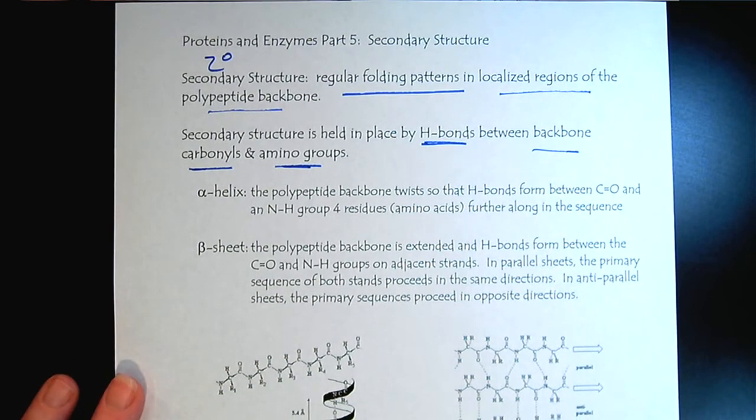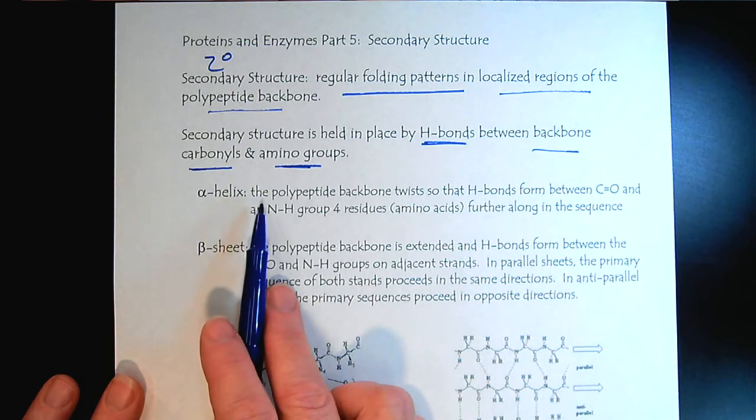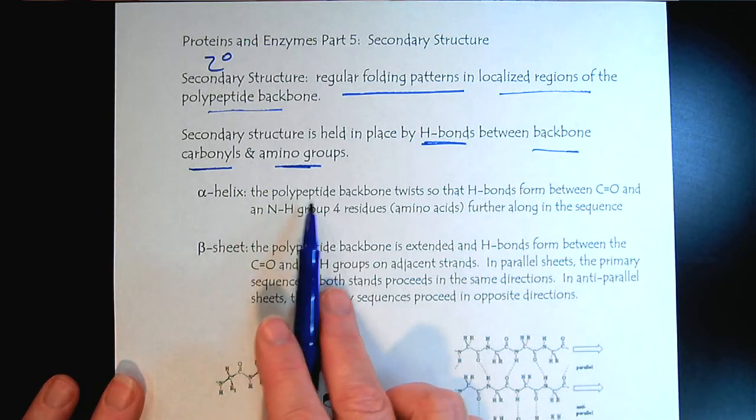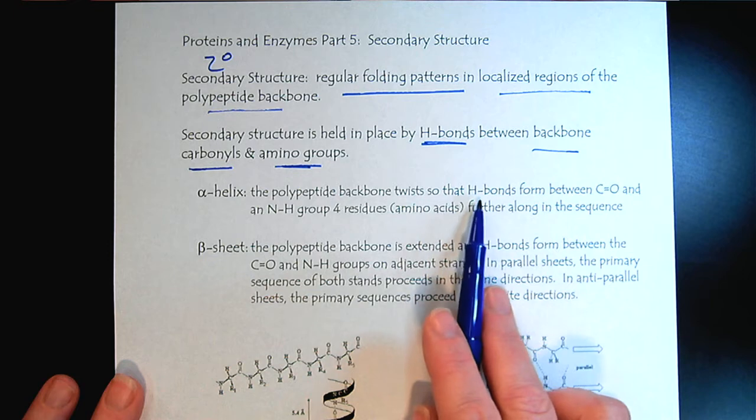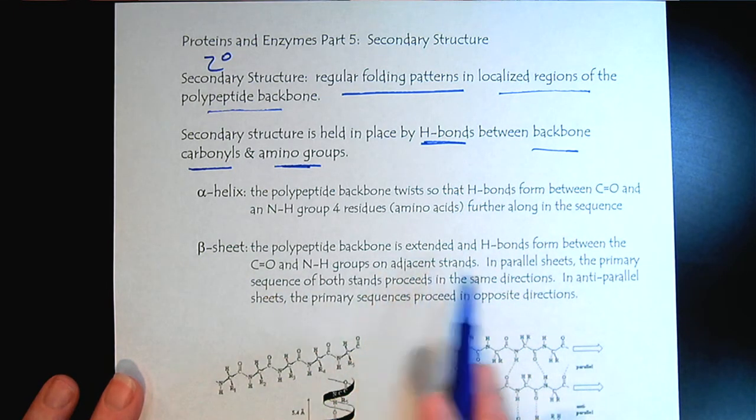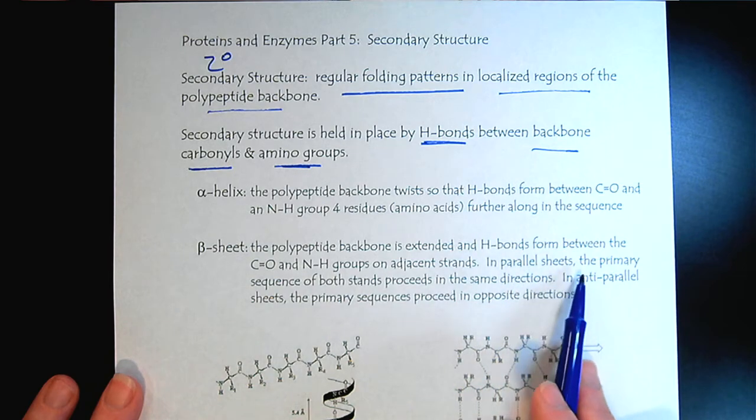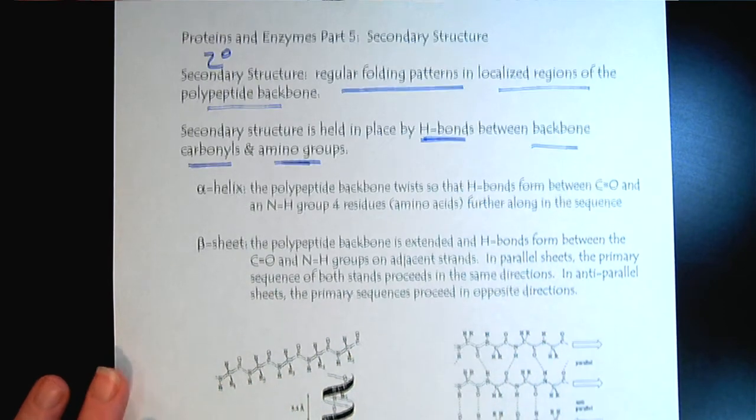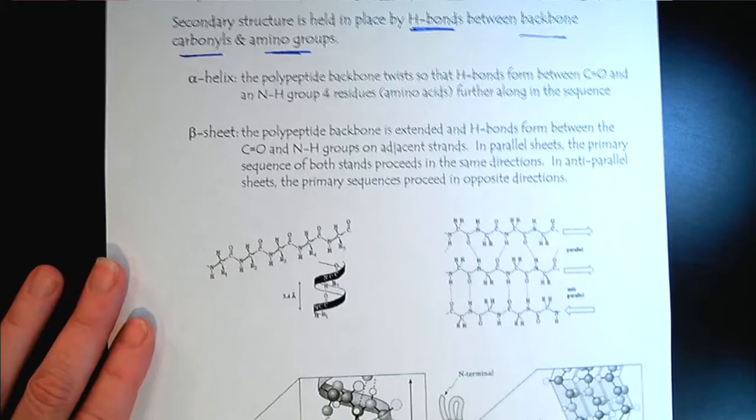Now, it comes in two flavors. We have the alpha helix, where the polypeptide backbone twists, and then we have the beta sheet, where it's more of a folding, and we get these parallel sheets. Let's look at these two more closely.